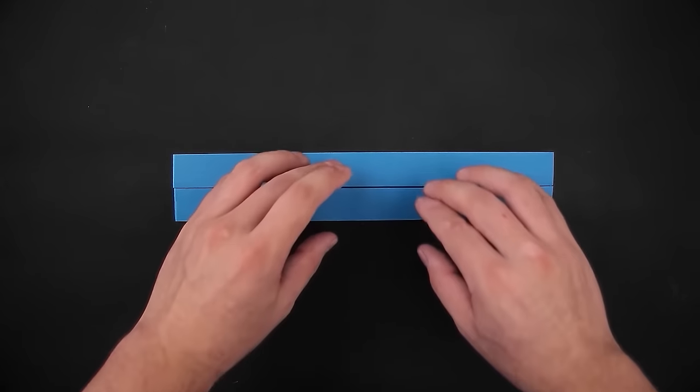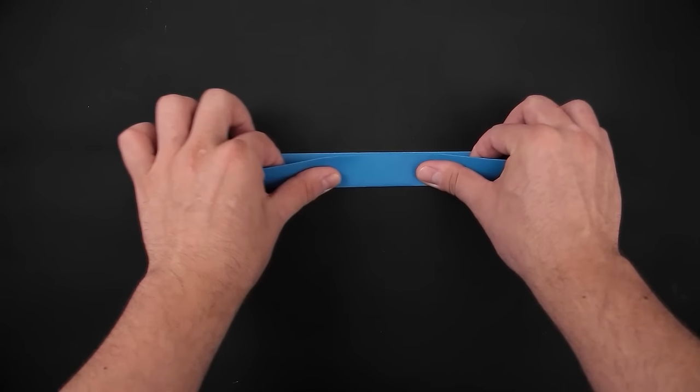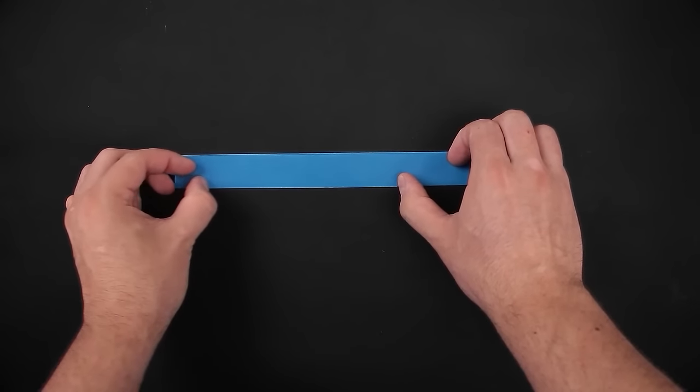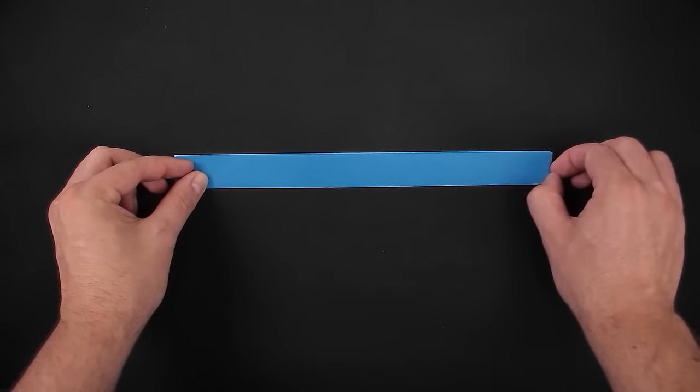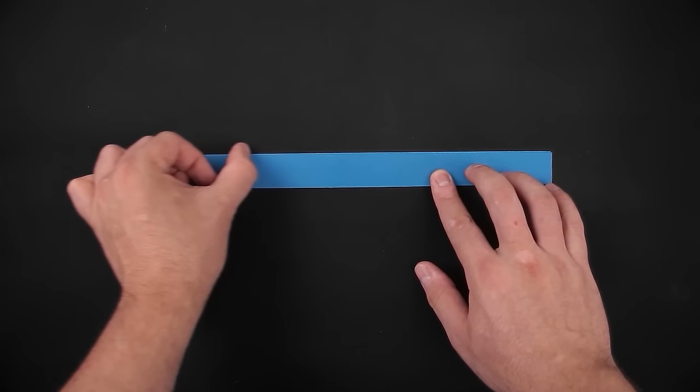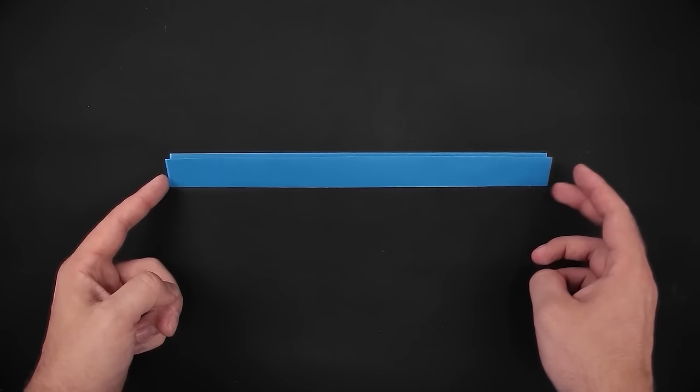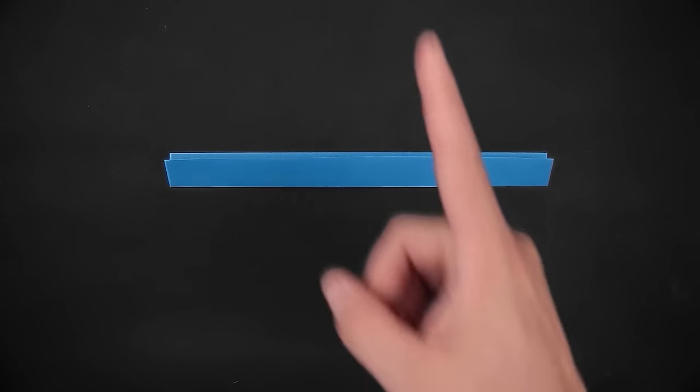And here at the end we can close it using the first line we made. And with the paper now completely folded, we're going to have to mark the middle again, but this time vertically.